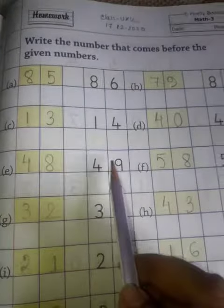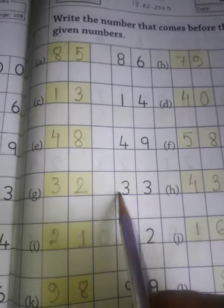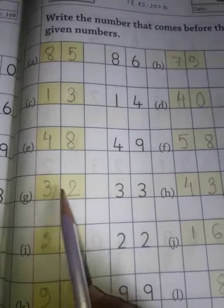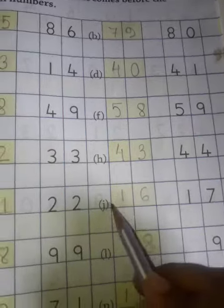48. 48, 49. 59: 58. 58, 59. 33: 32. 32, 33. 44: 43. 22: 21. 21, 22. 17: 16.